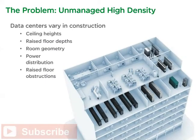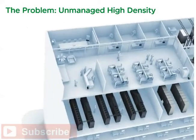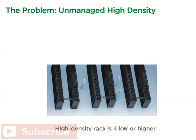Data centers designed for low-density racks, typically 1 to 2 kilowatts per rack, vary dramatically in construction. Ceiling heights, raised floor depths, room geometry, power distribution, and raised floor obstructions are all quite different. In addition, IT managers vary in how they define a high-density rack. This course defines a high-density rack as 4 kilowatts or higher. Regardless of which number is used to denote a high-density rack, the following deployment issues need to be considered.